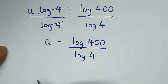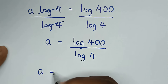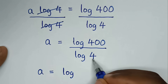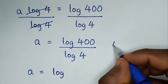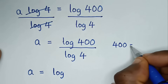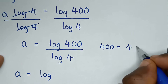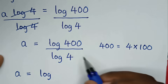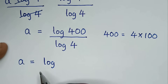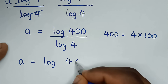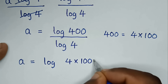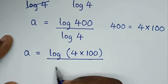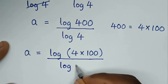Then in the next step, it will be a is equal to log of 400. Now 400 is equal to 4 times 100, so into here we will substitute this. It will be log of 4 times 100, in brackets, over log of 4.